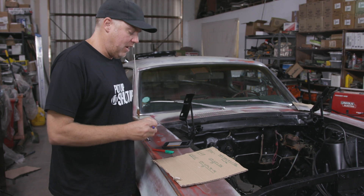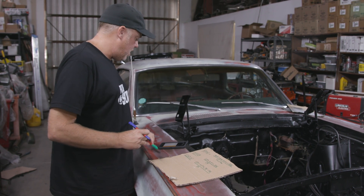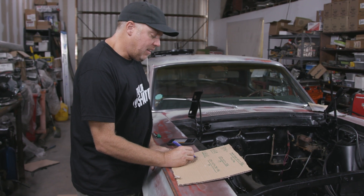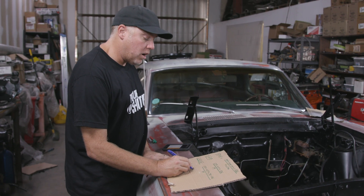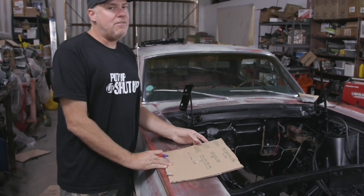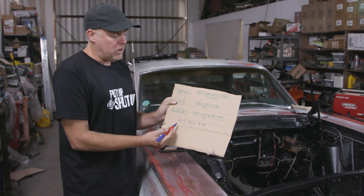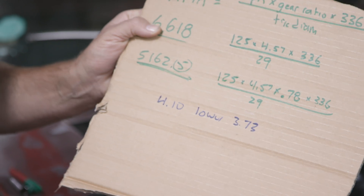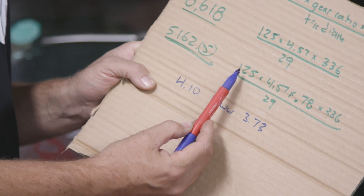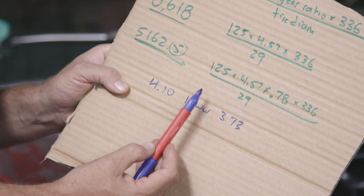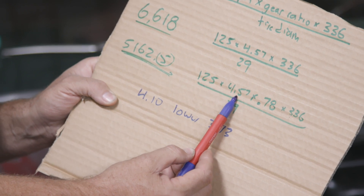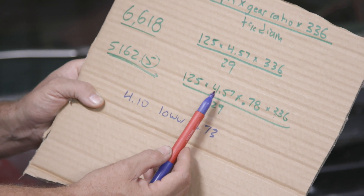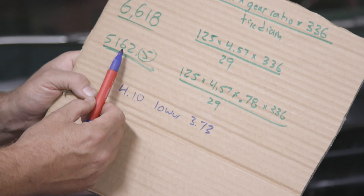Speaking of high and low, let me give you that education — I think I've done this once before on Roadkill Extra, but it always bears repeating. With gear ratios, a 4.10 is lower than a 3.73, even though the number is higher. Lower gear ratio has a higher number; higher gear ratio has a lower number. Going back to the formula: anytime your miles per hour is slower, your RPM is reduced. Anytime your rear axle ratio is higher — meaning a lower number — that reduces RPM. Conversely, a lower gear ratio, which is a higher number, will raise your RPM.